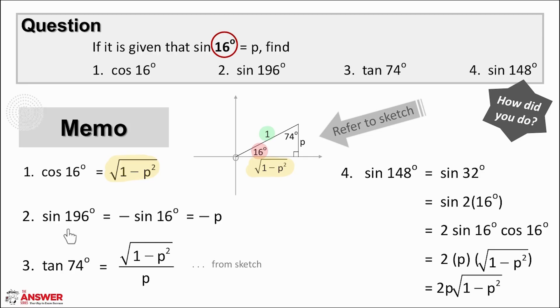Then for sin 196° we first need to reduce this to the ratio of an acute angle. So 196 degrees is a third quad angle which means sin in the third quad is negative because it's below the x-axis and our acute angle is 16 degrees which we can get excited about. And so this reduces to negative sin 16° which is then just negative p. Remember we were given in the question that sin of 16 equals p.